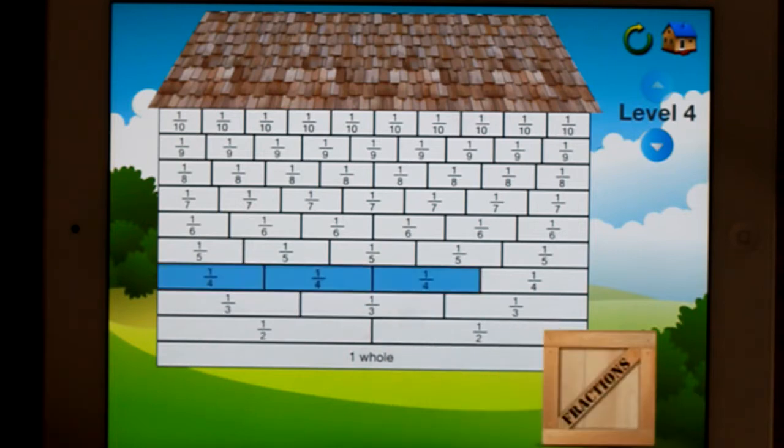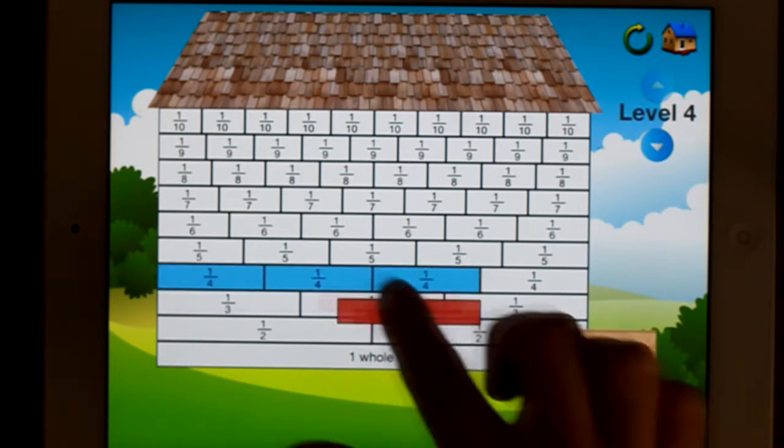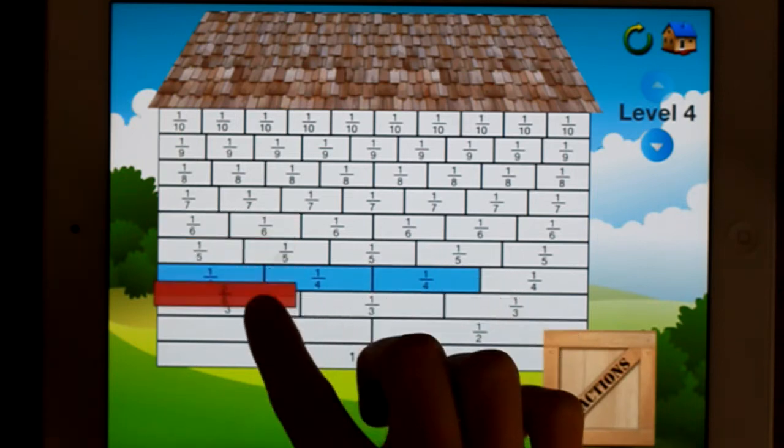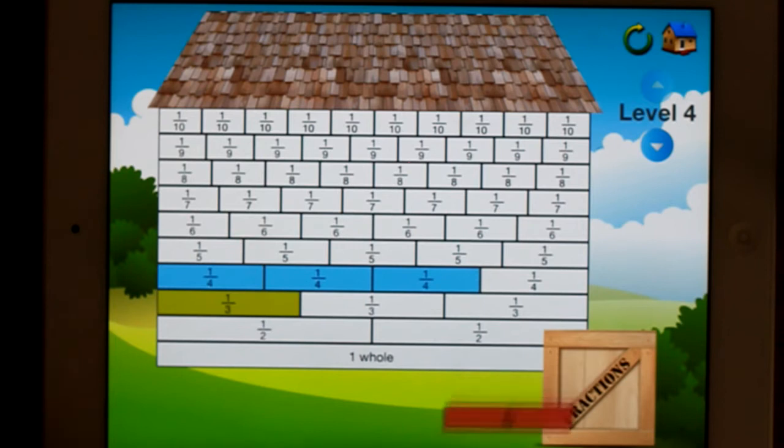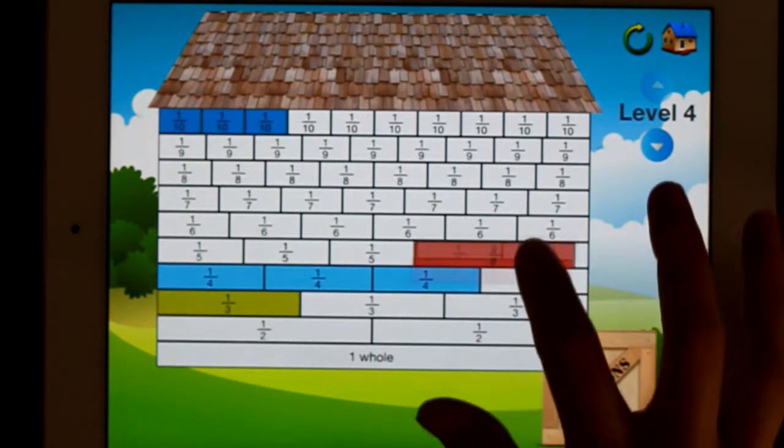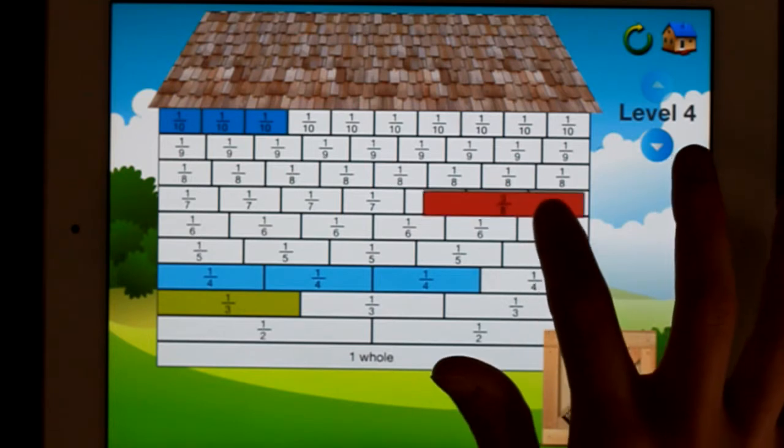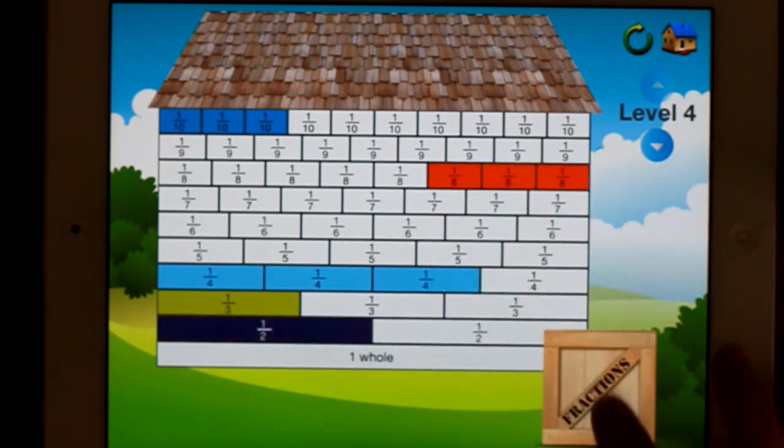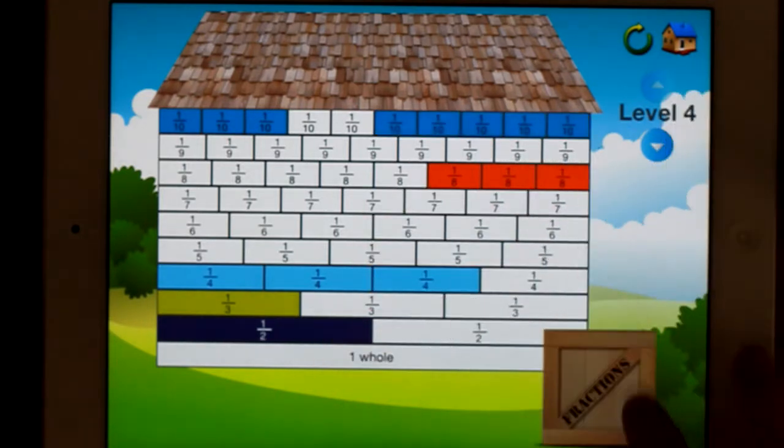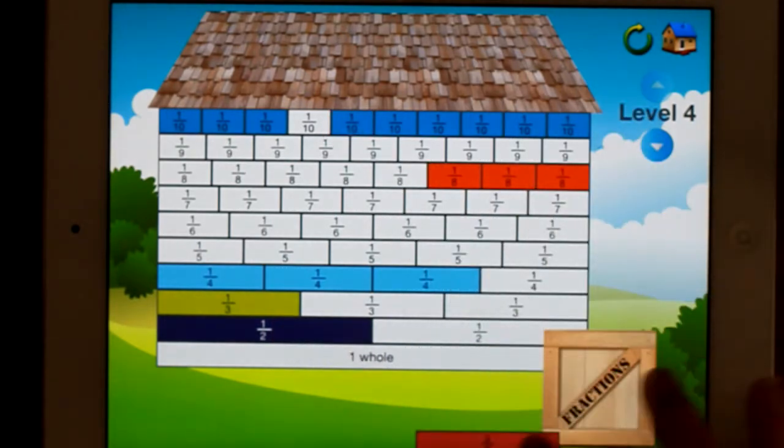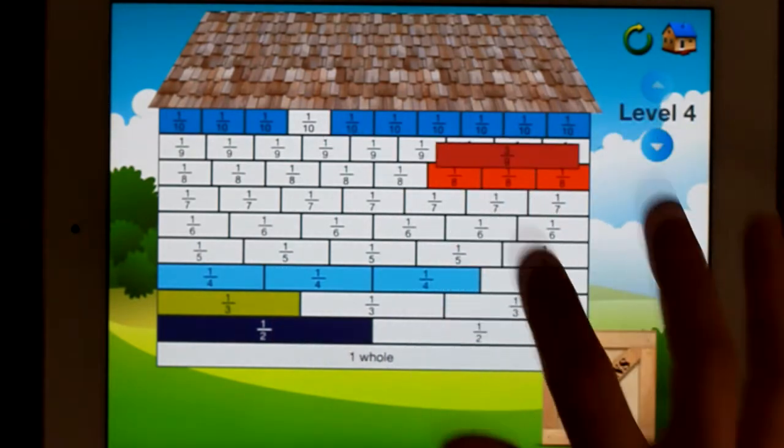And you've got to build your wall. So you can put three quarters there. Let's see what I get next. Two sixths. And put two sixths or we'll put in a third. So obviously it won't let me put it in the wrong spot. But I can of course put it either side.